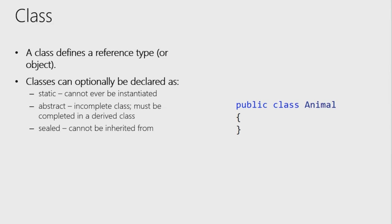A sealed class cannot be extended or inherited from. You're declaring that the specification of that object is final and nobody can extend it further. Extension methods can still add functionality without breaking encapsulation or exposing internal data.